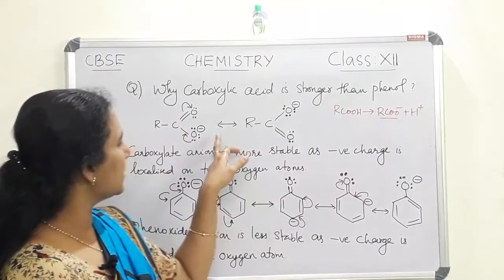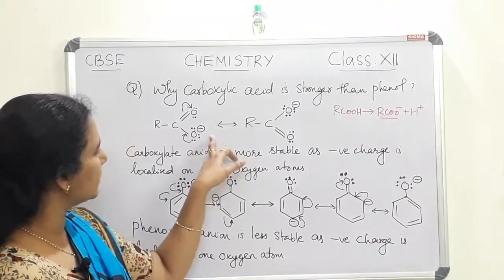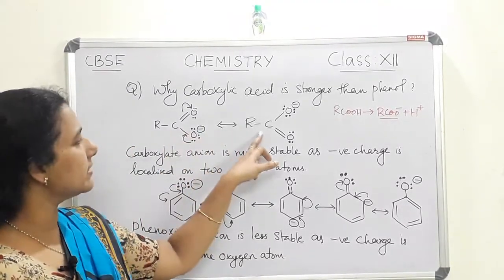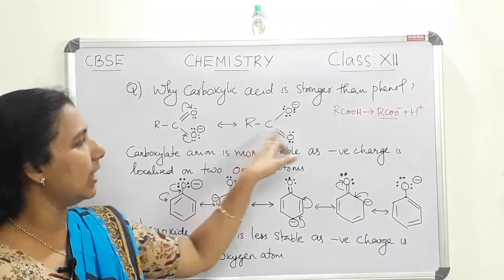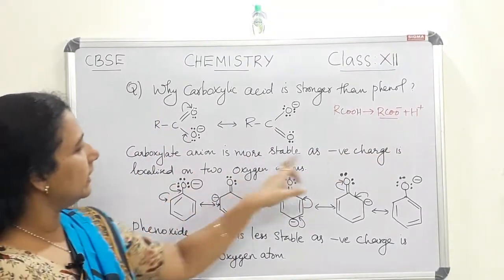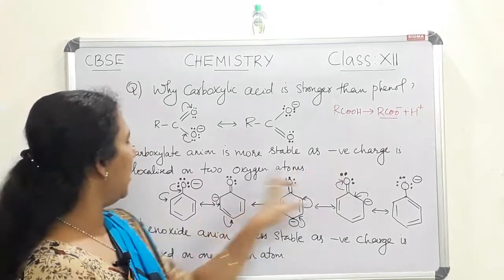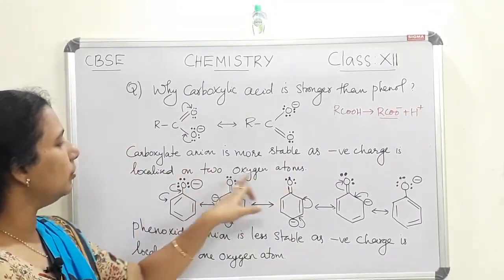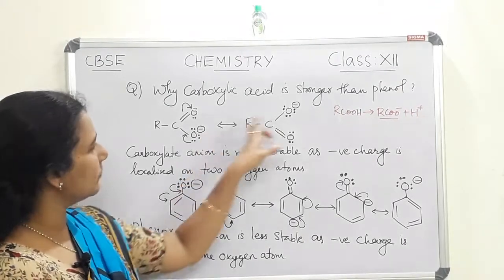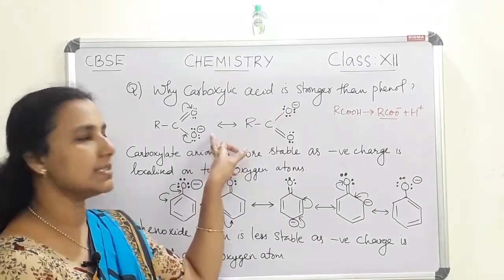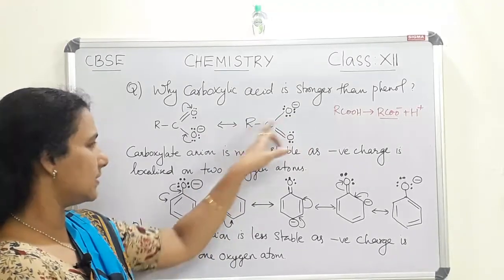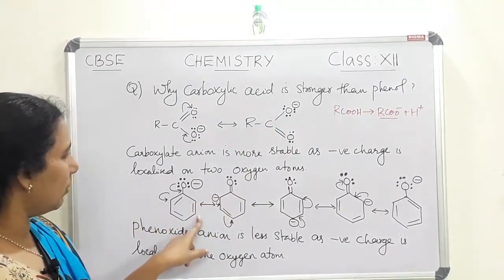The resonance structures of the carboxylate anion are drawn here. In these resonating structures, we can see that the negative charge is delocalized over two oxygen atoms.